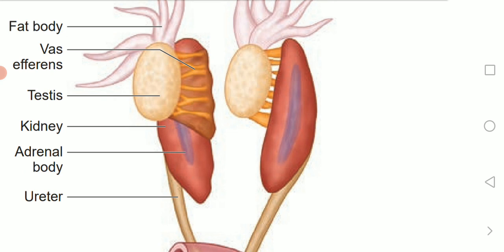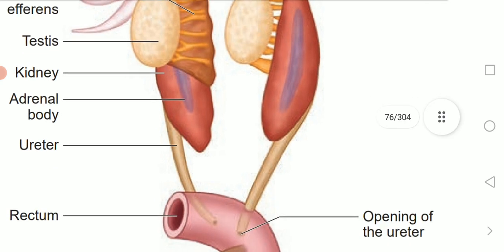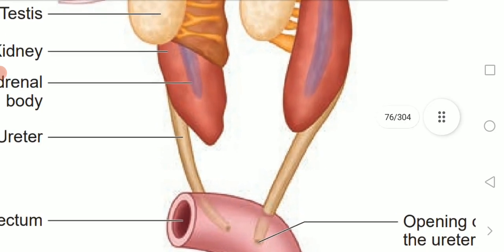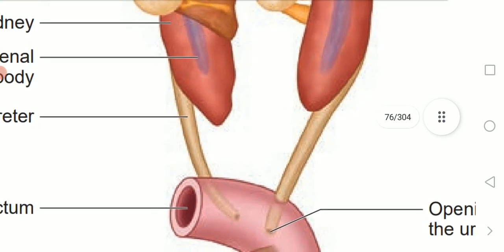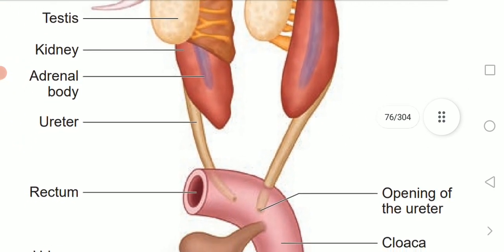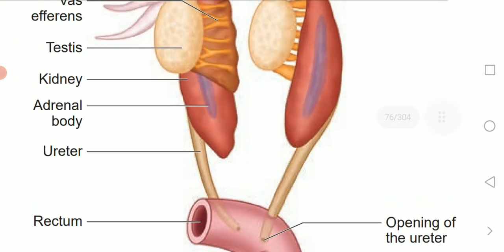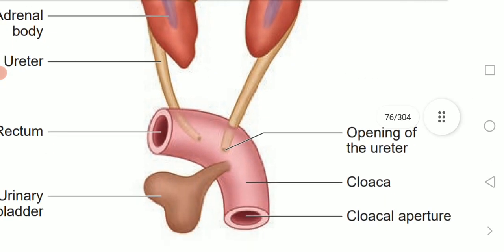The vas efferentia enter the kidneys on both sides and open into the Bidder's canal. Finally, they communicate with the urinary genital ducts that come out of the kidneys and open into the cloaca. This completes the male reproductive system of frog.